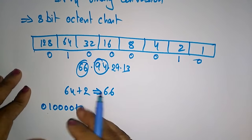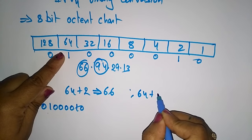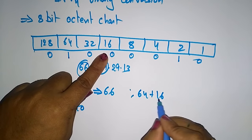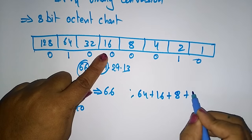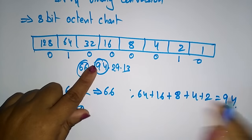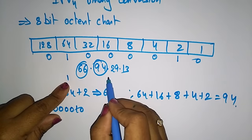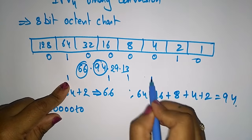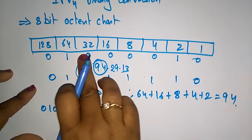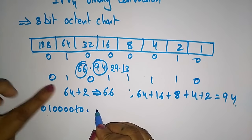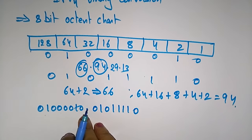Next is 94. 94 is a combination of 64 plus 16 plus 8 plus 4 plus 2, which gives a total of 94. In those positions just place a 1: 64 is 1, 16 is 1, 8 is 1, 4 is 1, 2 is 1, and the remaining are 0s. So 94 in binary is 01011110.